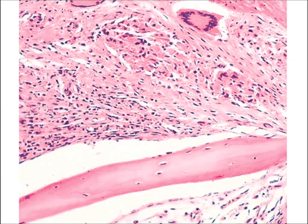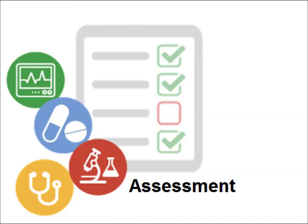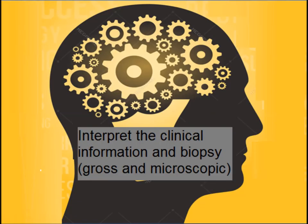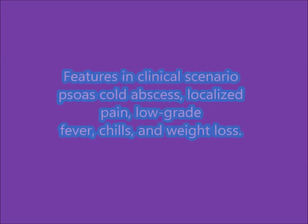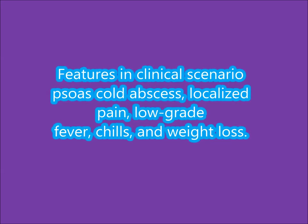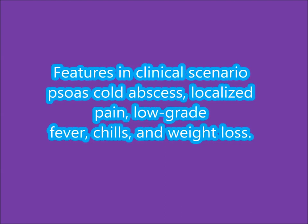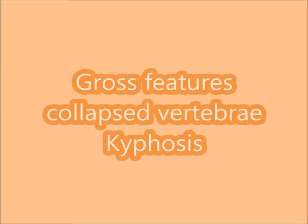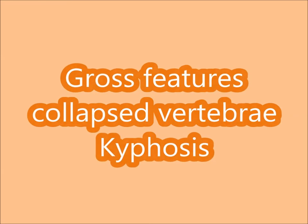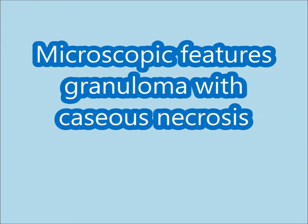Assessment taking into account the clinical scenario, the gross picture, and the microscopic findings — all these point towards the diagnosis of TB osteomyelitis. The features supporting the diagnosis are: psoas cold abscess, localized pain, low grade fever, chills, and weight loss. The features in the gross specimen are collapsed vertebrae and kyphosis. The features in microscopy are granuloma with caseous necrosis and Langhans-type giant cells.